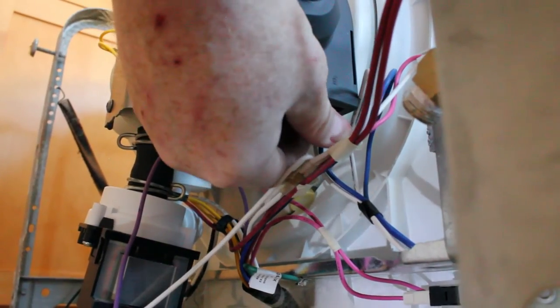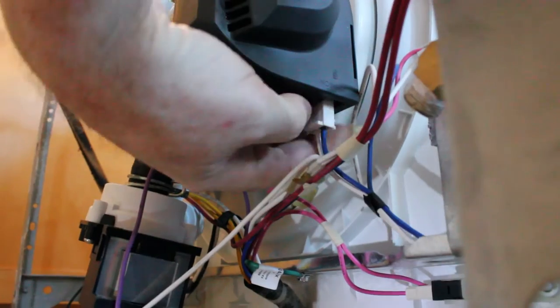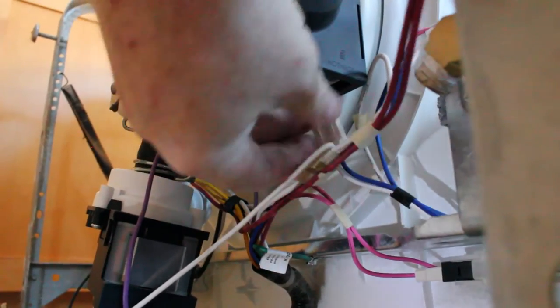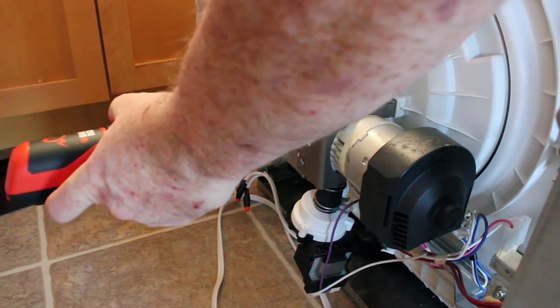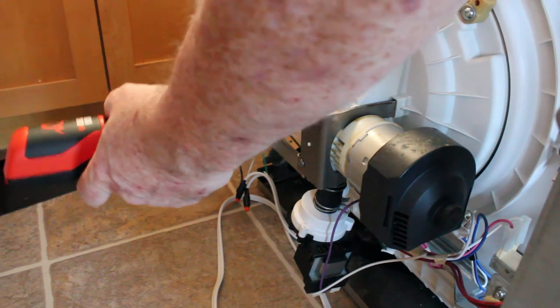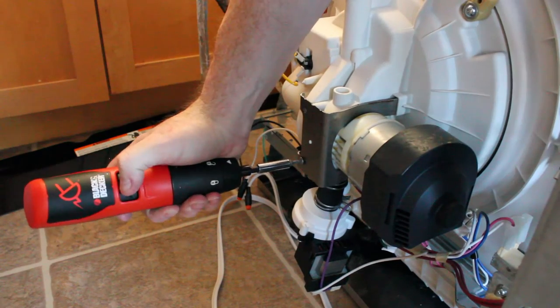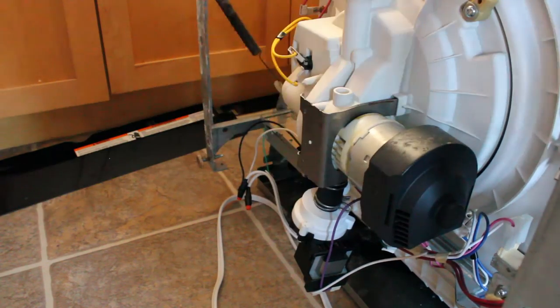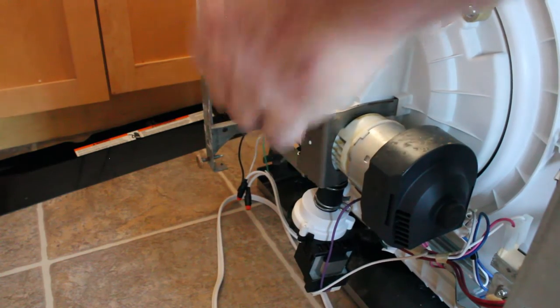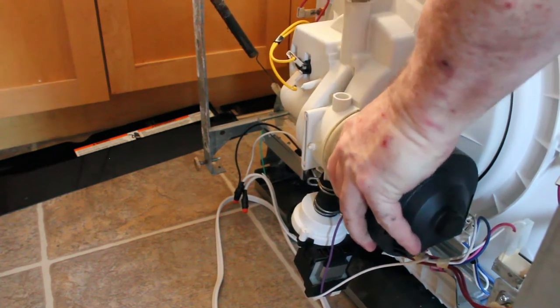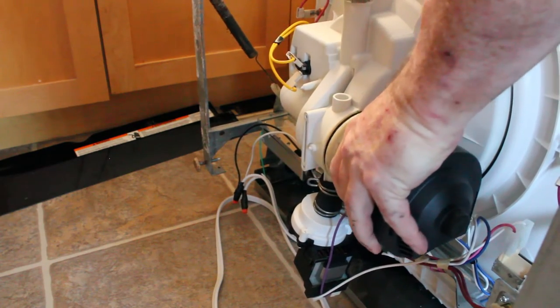Unplug the power supply line from the circulation pump. Then remove the two screws that hold the circulation pump's retaining clip in place. Now you can remove the pump itself. It takes a little bit of wiggling, but it's not too hard to get out.